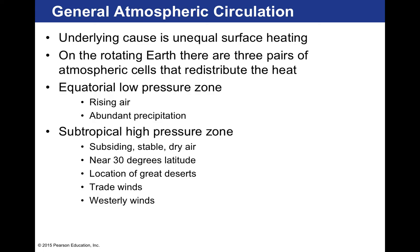General atmospheric circulation is driven by unequal surface heating from the sun. The sun heats different parts of the Earth at different temperatures, creating pressure differences, which then drive atmospheric circulation. Storms, low pressure, and high pressure systems are hard to predict, but there are generalized circulations on Earth that are always very predictable. On the rotating Earth, there are three pairs of atmospheric cells that redistribute heat, including the equatorial low pressure zone where there is abundant precipitation — the tropics.